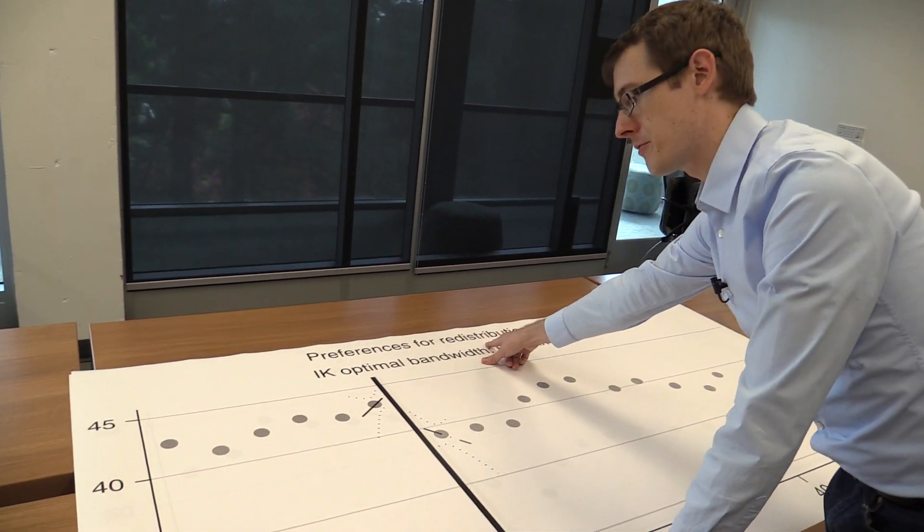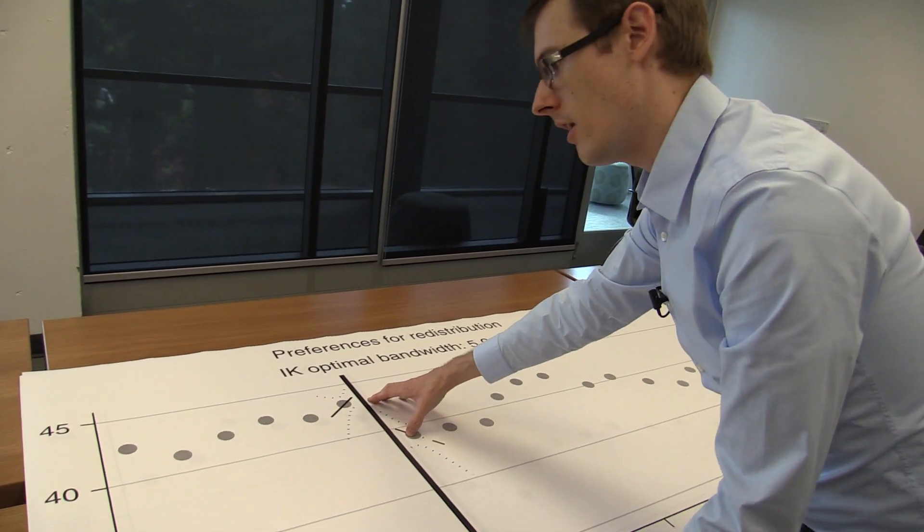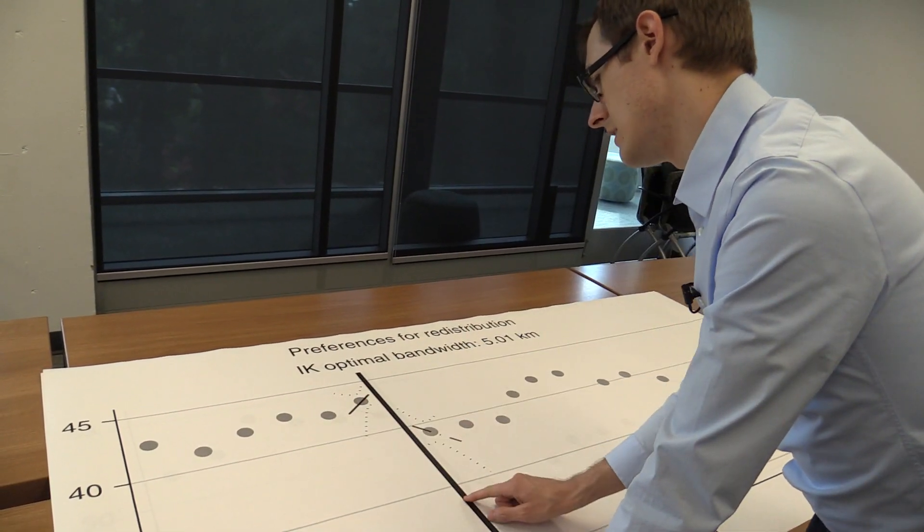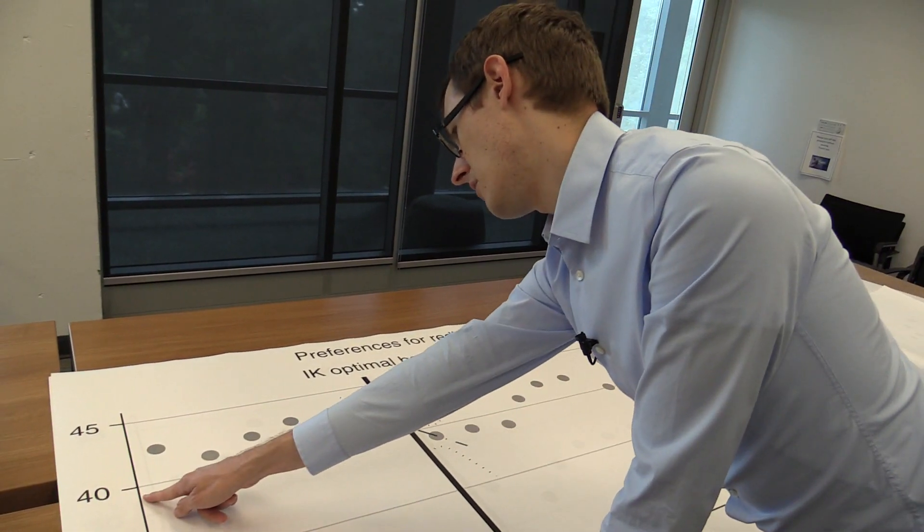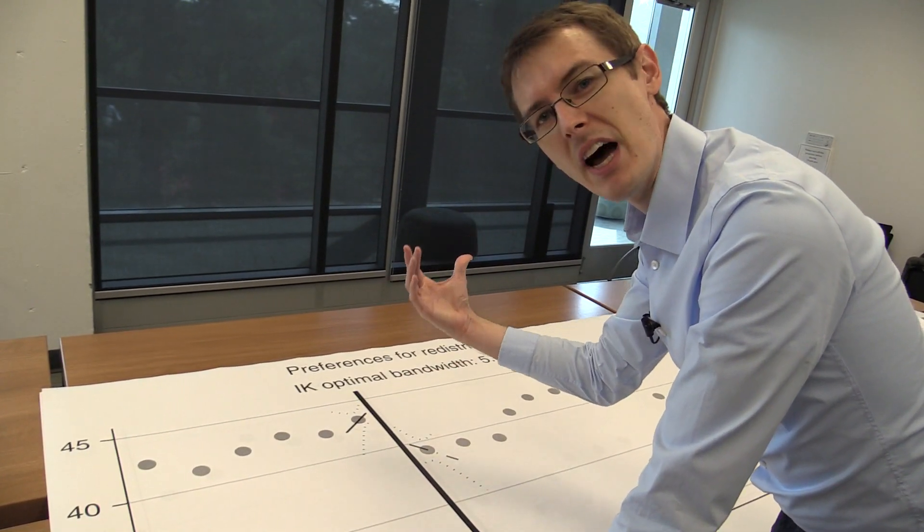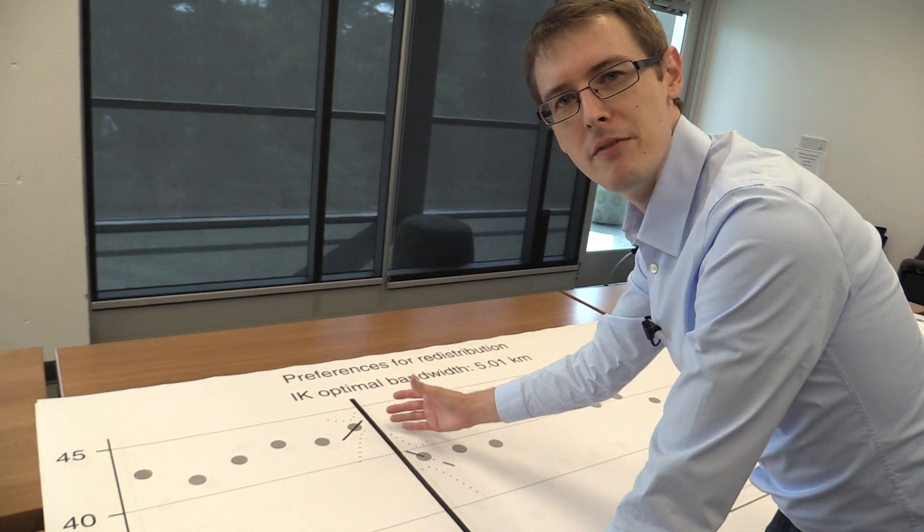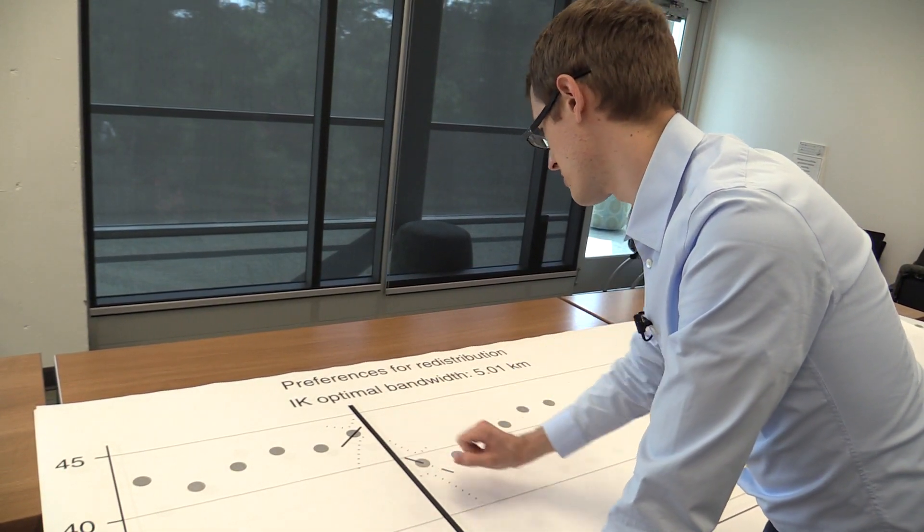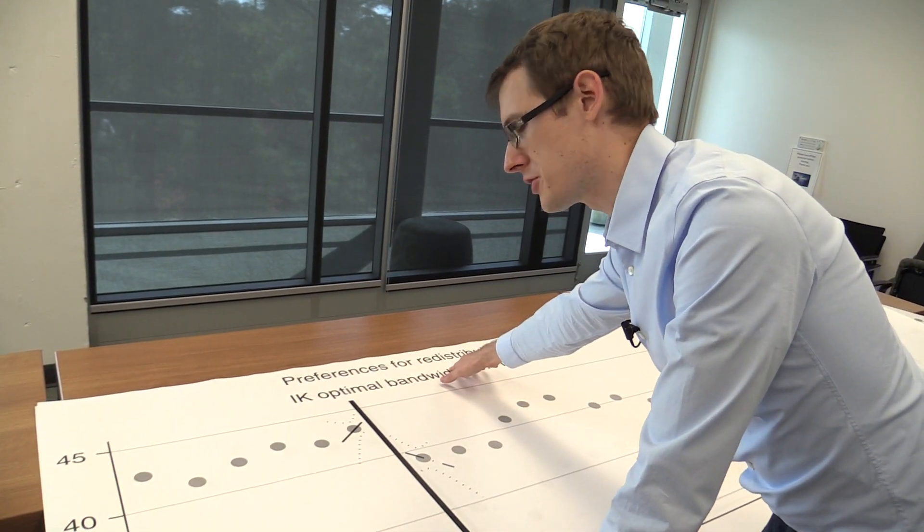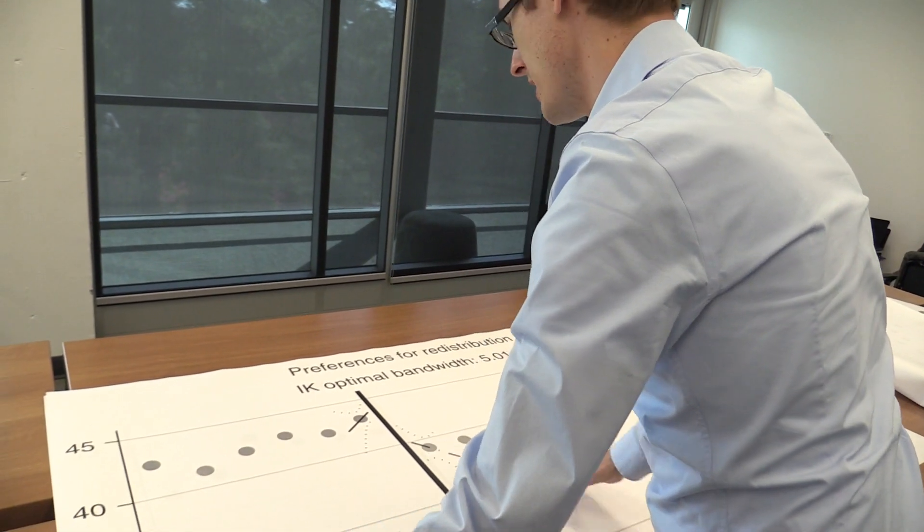Over here we have preferences for redistribution. And we see an effect that's not quite as large. You see on the Catholic side it's about 43 percent. And then on the Protestant side it's about 39 percent, so something about 4 percent. Before we found 9 percent, so it's still pretty big. But maybe it's a little bit of an effect, about 4 percent. Being on the Protestant side lowers your preferences for redistribution. So you're not as inclined to redistribute to the old age or the disabled.